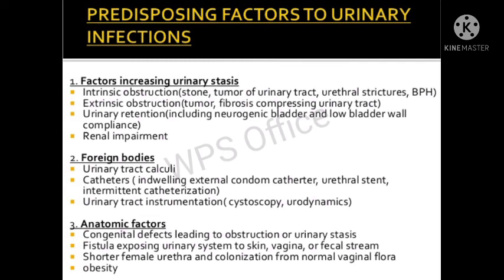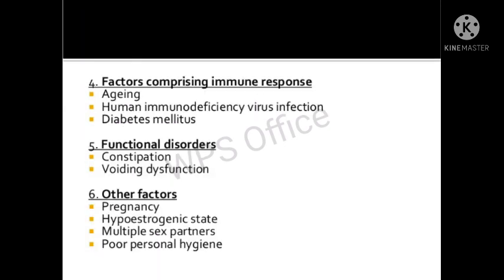Urinary tract instrumentation for diagnostic purposes — inserting instruments like cystoscopy or urodynamics — can also cause UTI. Anatomic factors such as congenital defects in the urinary system increase chances of UTI. Factors compromising the immune system including aging, HIV virus, and diabetes mellitus also contribute. Functional disorders like constipation, voiding dysfunctions, pregnancy, multiple sex partners, and poor personal hygiene are additional risk factors.